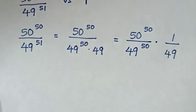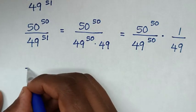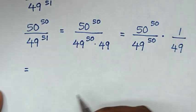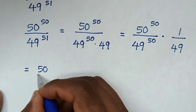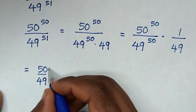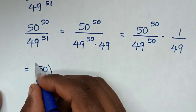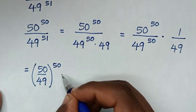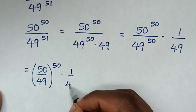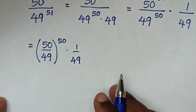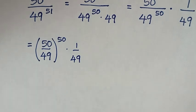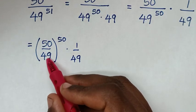From here, we have the same power of 50, so it will be equal to (50 over 49) bracket to the power of 50, then times 1 over 49.